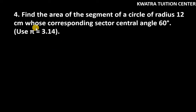Let's start with question number 4. It says find the area of the segment of a circle of radius 12 cm whose corresponding sector central angle is 60 degrees.